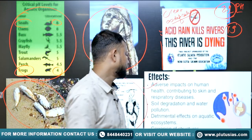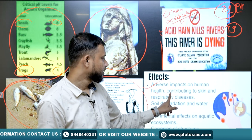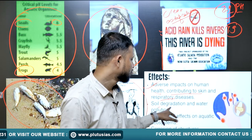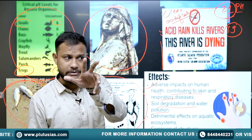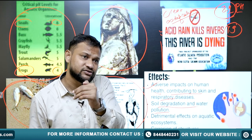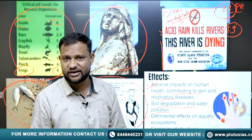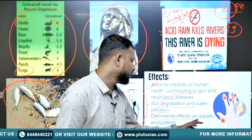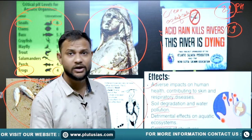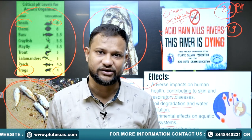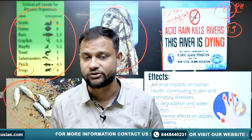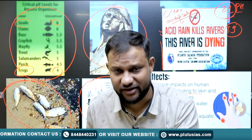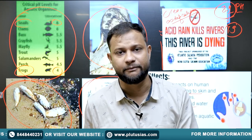Other impacts include adverse health effects — contributing to skin and respiratory diseases. Acid rain also impacts plant productivity, leads to soil degradation and water pollution. Many northeastern states of India have registered a decline in soil pH, which impacts overall agricultural productivity. Additional effects include detrimental impacts on aquatic ecosystems, corrosion of structures, and reduced visibility. In winter conditions, the consequences are even more severe.